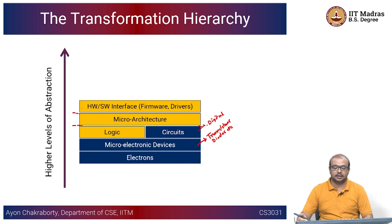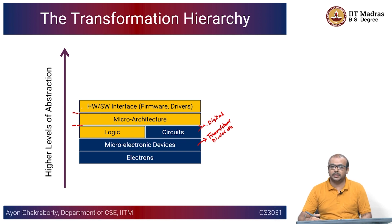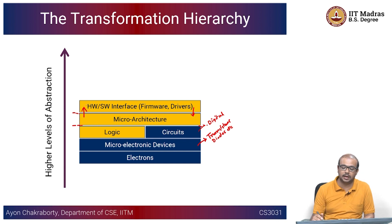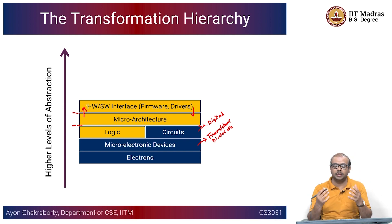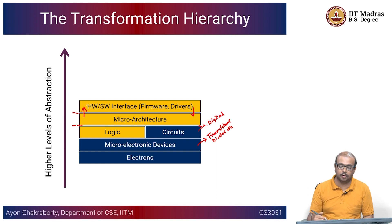Then you have the hardware and software interface, because once you create this computing system, you need to have control over it. You have the underlying hardware, which is a set of logical circuits, and you need to program them for your own computational needs. There is a clearly defined boundary between the underlying hardware and the software. Software is a piece of code that you write and want executed on the computer. We are going to come into those details later as the course progresses.